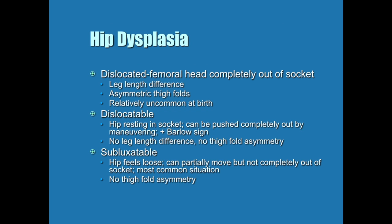You need to know the different distinctions in hip dysplasia. Dislocated means that the head of the femur is completely out of the socket. Clinically, we see legs of different lengths and asymmetric thigh folds. It's not common to see this right at birth — this is usually something we see if we missed it in the newborn exam and the child continues to grow, showing up during a normal pediatric visit.